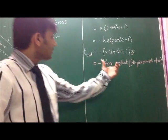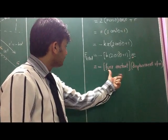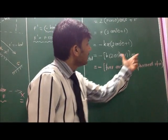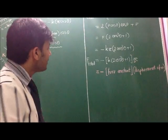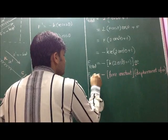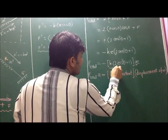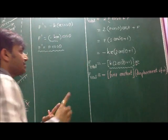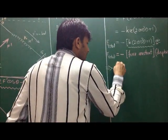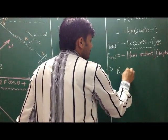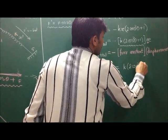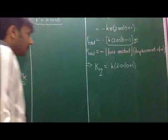This is in the standard SHM format where the restoring force equals a constant times the displacement. We can identify the equivalent spring constant of this system of three springs. The equivalent spring constant k_equivalent equals k times (2cos²θ + 1), where all three springs have the same force constant k and both angled springs make angle theta.